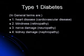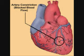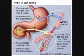There are several complications in type 1 diabetes, and these are heart disease, blindness, nerve damage, and kidney damage.